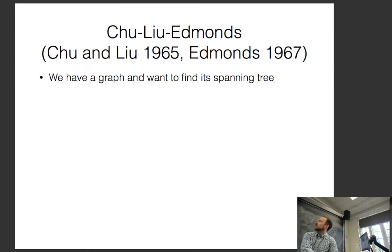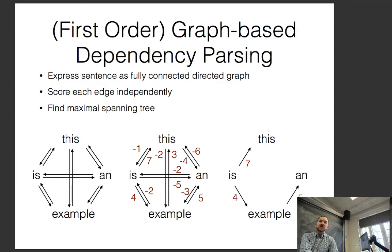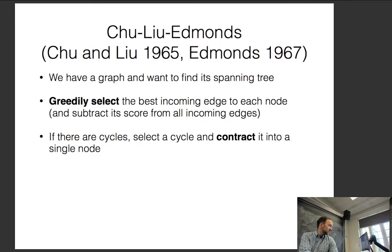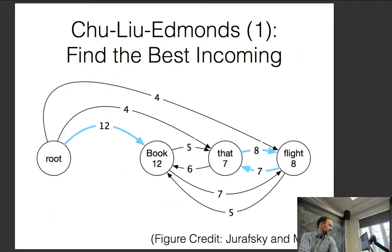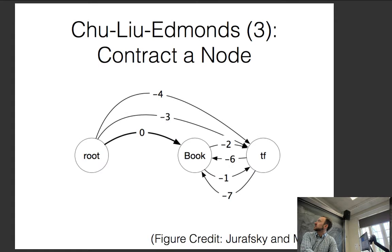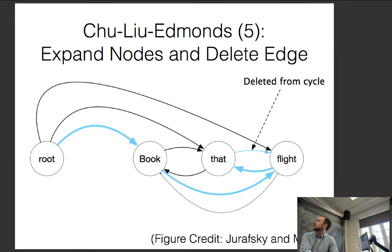The Chu-Liu/Edmonds algorithm: the idea is that after calculating all the edge scores, we want to find a spanning tree. We greedily select the best incoming edge to each node. If there are cycles, we contract the cycle into a single node and then recursively call the algorithm on the graph. We find the two highest-scoring edges that form a cycle, subtract the max incoming one to each, contract the cycle, and then expand it appropriately to get our tree.